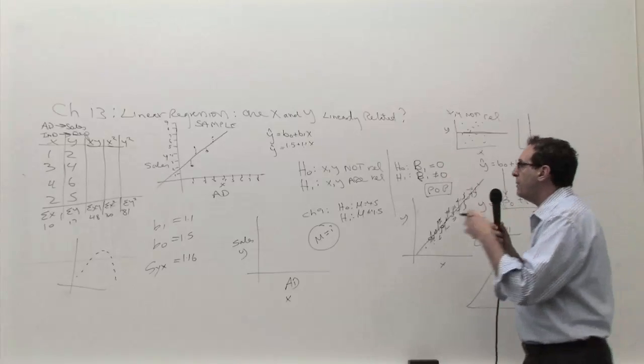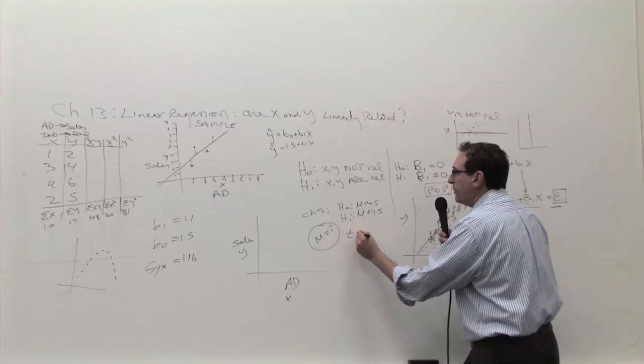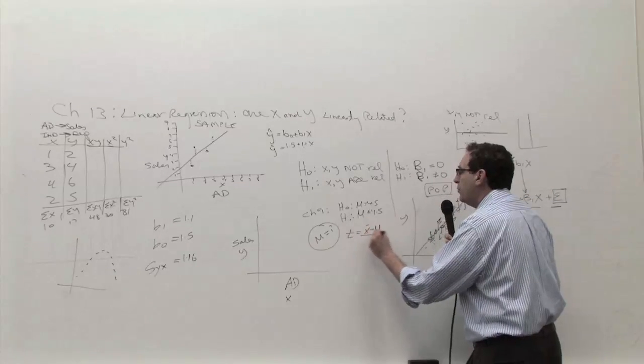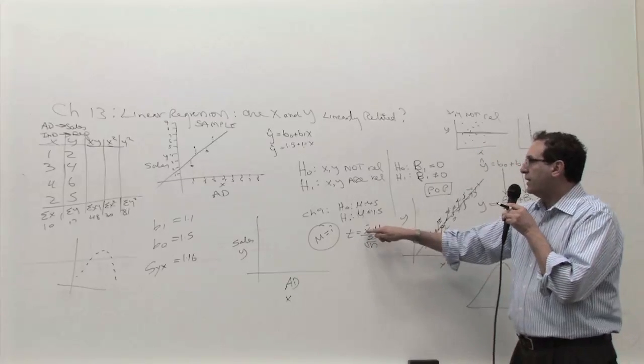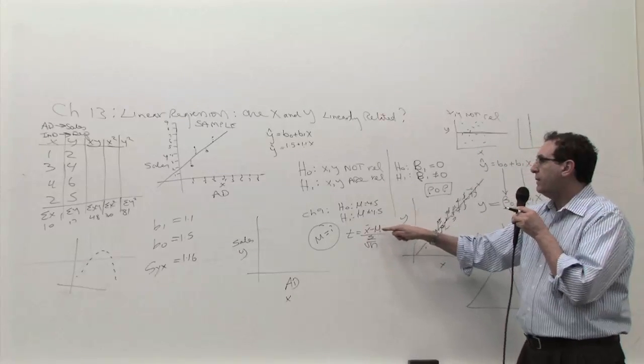Remember in the old formula, what was the formula here? Let's go back to this formula, back in Chapter 9, X bar minus mu over S over the square root of N. So you're going to have, the X bar is like the B1, the mu is going to be zero, because...